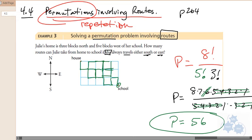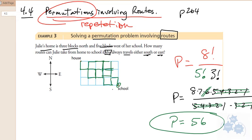Let's read the problem again here. It says, Julie's home is three blocks north and five blocks west of her school. How many routes can Julie take from home to school if she travels only south to east? So, yeah, that's the number of different routes that can be taken from house to school. Fifty-six different routes.